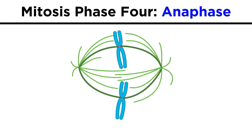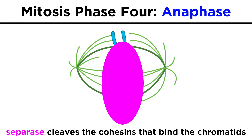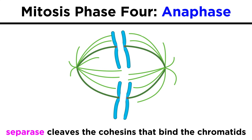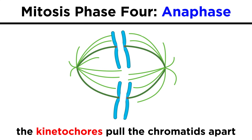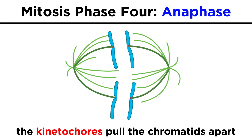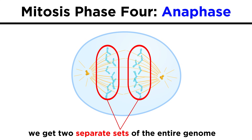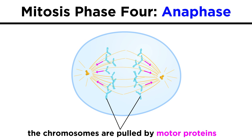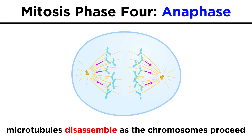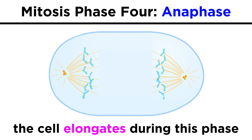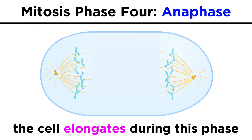In the anaphase, the shortest of all the phases, the enzyme separase cleaves the cohesins that keep the sister chromatids together, and the kinetochores pull the chromatids apart on each chromosome, thus generating the two separate sets of the genome. These chromosomes are then pulled by motor proteins that attach to the kinetochores, which reel them in by their centromeres to opposite ends of the cell, with the microtubules they are attached to coming apart as they go. The cell also elongates during this phase until the two sets of chromosomes are far apart.